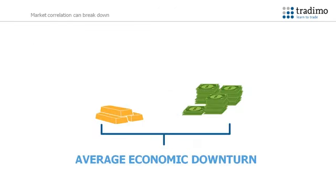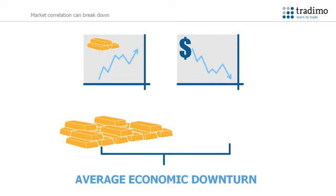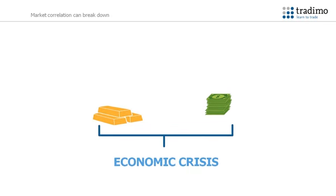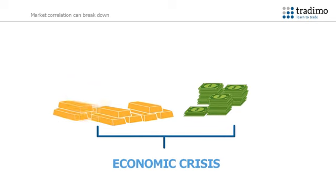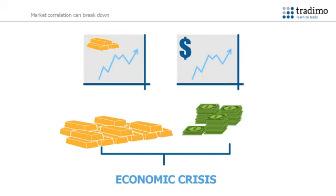There are, however, times when the correlation between markets breaks down under abnormal economic circumstances. For example, we have established that during periods of an economic downturn, investors and traders will seek a safer investment in gold, and capital will flow away from the US dollar. In an economic crisis, however, this pattern can break down, because the US dollar is seen as a safe haven, as well as gold. In an economic crisis, some investors may want to buy US dollars, whereas other investors revert to gold. Therefore, both gold and the US dollar may gain value when the economic outlook is in a particular state of turmoil.